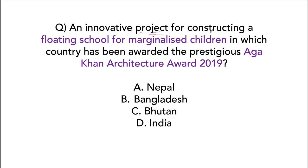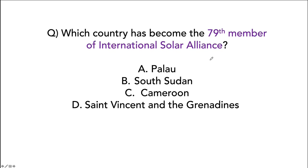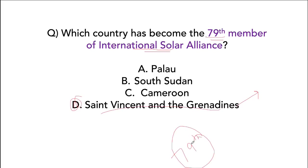An innovative project for constructing a floating school for marginalized children has been awarded the prestigious Aga Khan Architecture Award — given to Bangladesh for 2019. Which country has become the 79th member of the International Solar Alliance? It is Saint Vincent and the Grenadines. The International Solar Alliance is headquartered in Gurugram in Haryana.